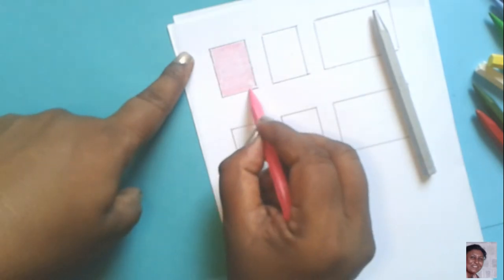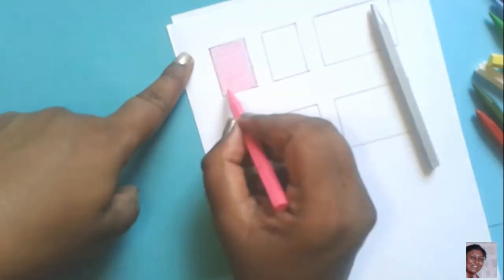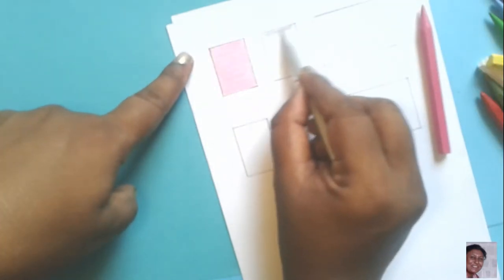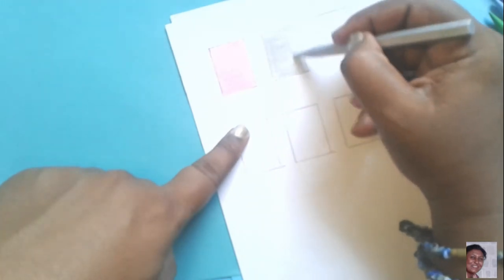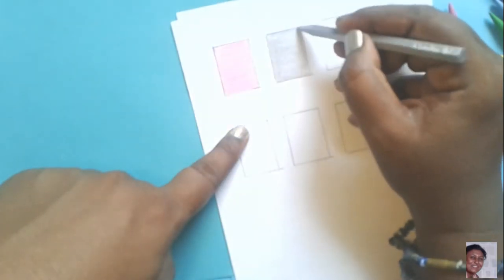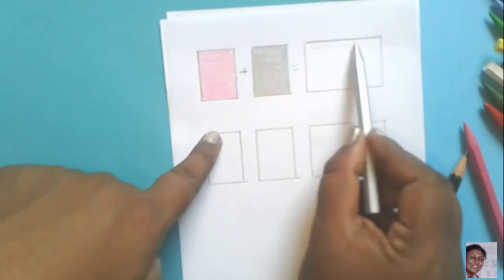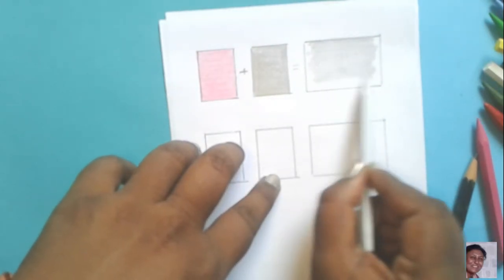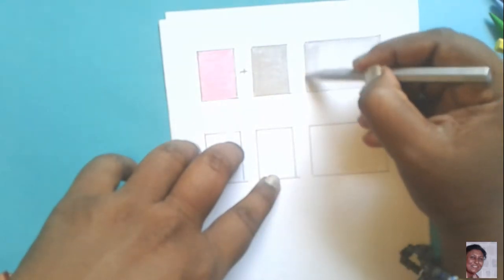Pick up any two colors and color them in the two small boxes. Then, with the same two colors, color in the bigger box and mix these two colors. What you will get is a new color.